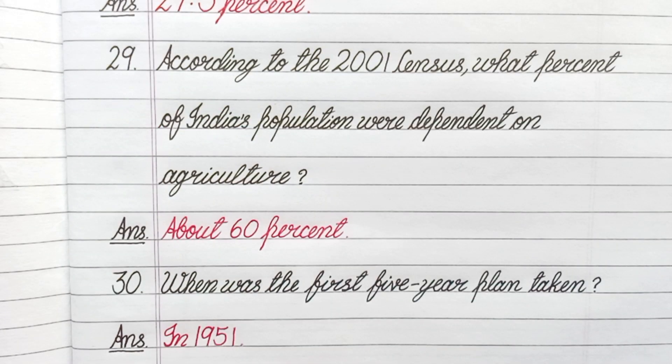Question number 30. When was the first five-year plan taken? Answer: in 1951.